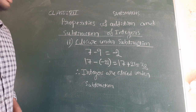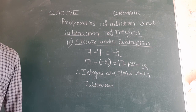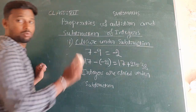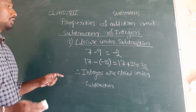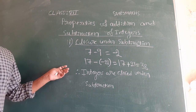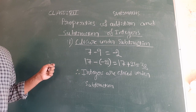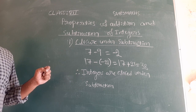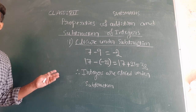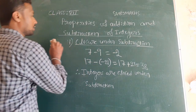Now we will see the next property. While writing, they have given examples in the textbook — write those and also write at least minimum five examples for closure under subtraction.